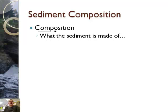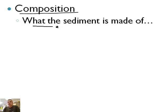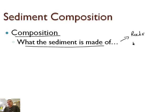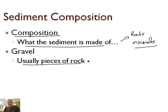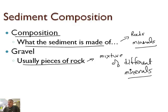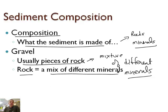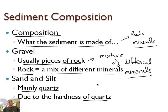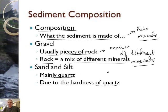Something else to note is that the composition of a sediment affects what's going to be transported. Composition means what the sediment is made of — what types of rocks and minerals it consists of. Gravel is usually pieces of rock, and a rock is really a mixture of different minerals. Quartz is a mineral found in many rocks, but not all rocks are purely one mineral. Sand and silt, however, are primarily made of quartz, because quartz is very hard. As a river flows, it breaks down sediments, making them smaller and smaller. Quartz, being very hard, is one of the hardest substances to break down, so mostly sand ends up being made of quartz.